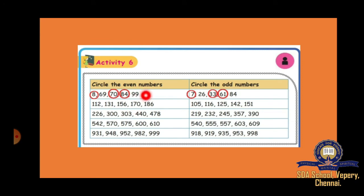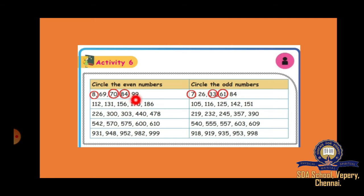Next, it is circle the even numbers or circle the odd numbers. Even numbers end in 0, 2, 4, 6, or 8. Odd numbers end in 1, 3, 5, 7, or 9. You have to look at the last digit — the ones place only — to tell whether it is even or odd. For example: 8 is even, 9 is odd, 0 is even, 4 is even, 7 is odd, 6 is even, 3 is odd, 1 is odd, 4 is even.